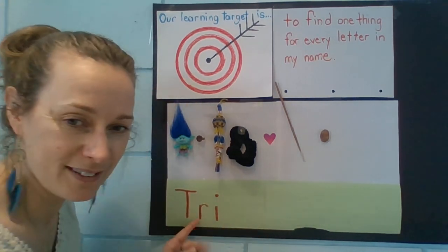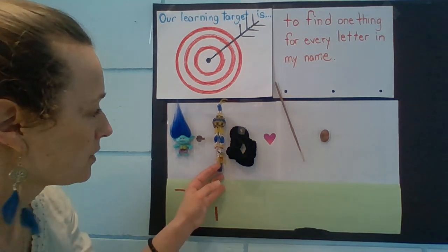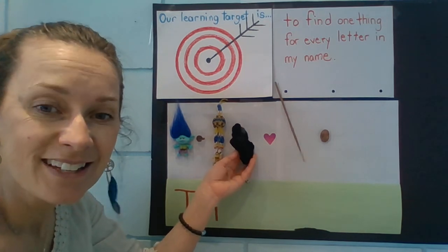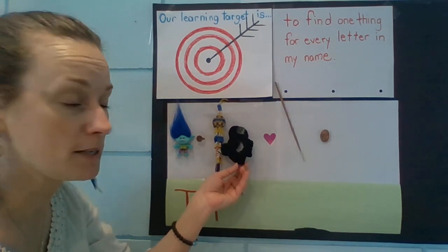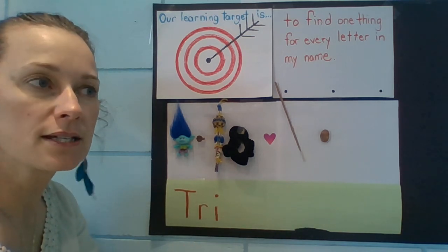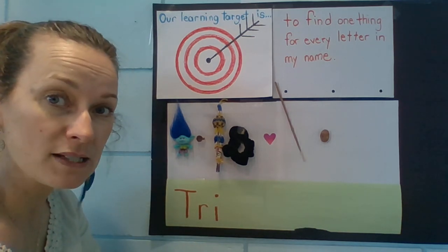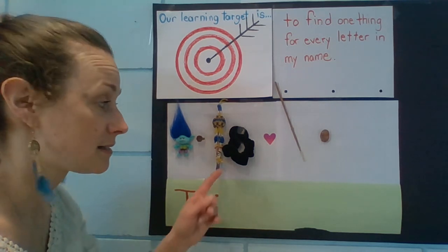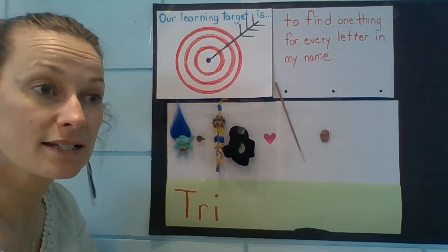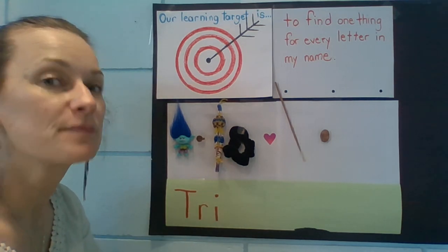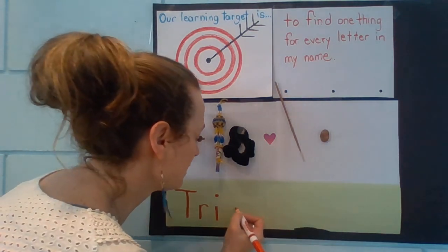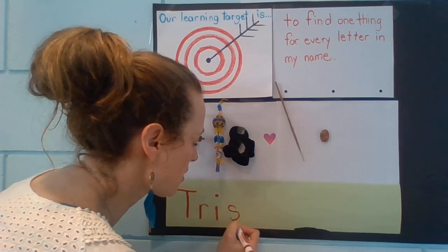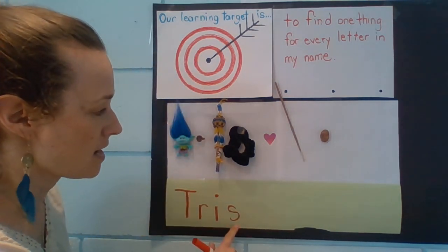So I have the first three letters of my name. Now this I borrowed from Olivia, and it's a scrunchie. Do you remember what letter makes that sound — like 'snake' and 'scrunchie' and 'silly'? The letter S. So that's my name so far: T-R-I-S.